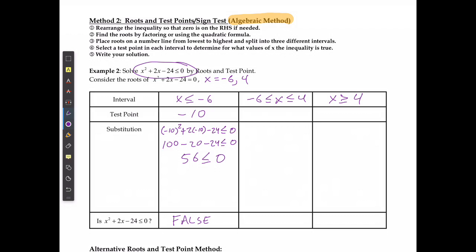For the second region, I'm going to use the easiest point: x is 0. I can state that 0 squared plus 2 times 0 minus 24 is less than or equal to 0. Well, 0 squared is just 0, 2 times 0 is just 0, so it's just negative 24 is less than or equal to 0. That is true.